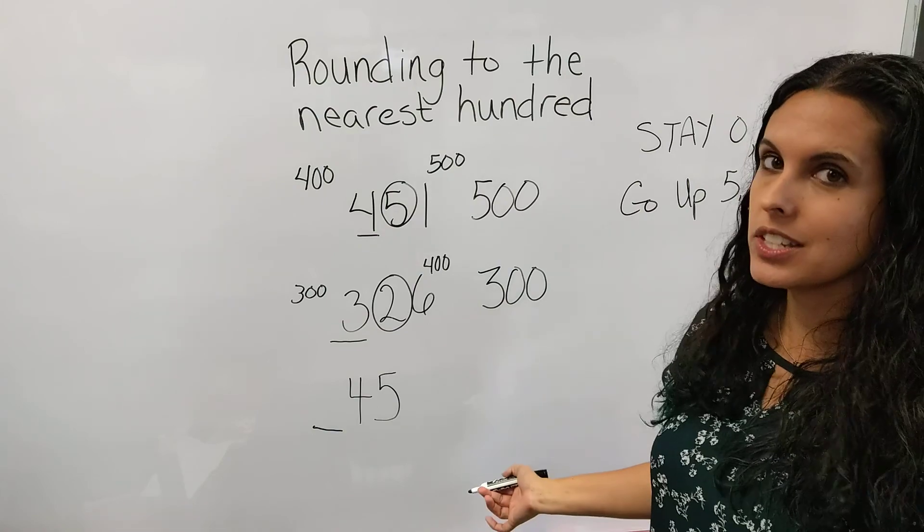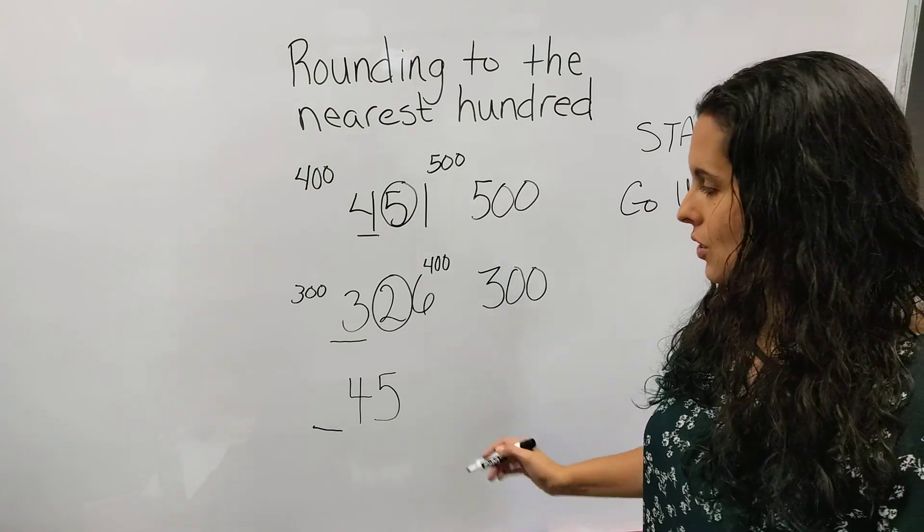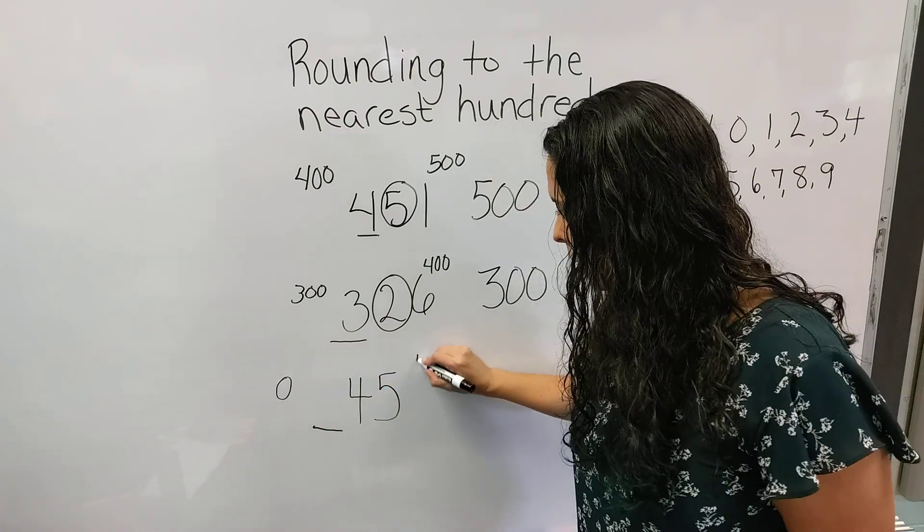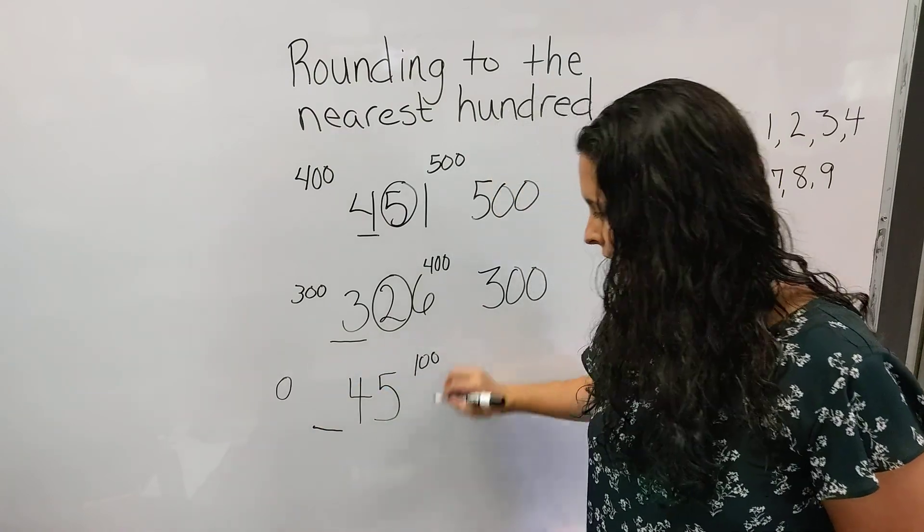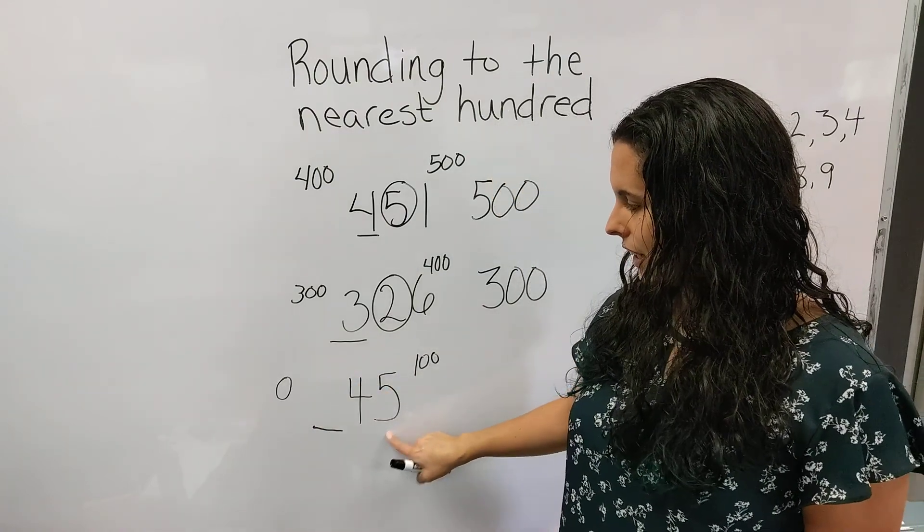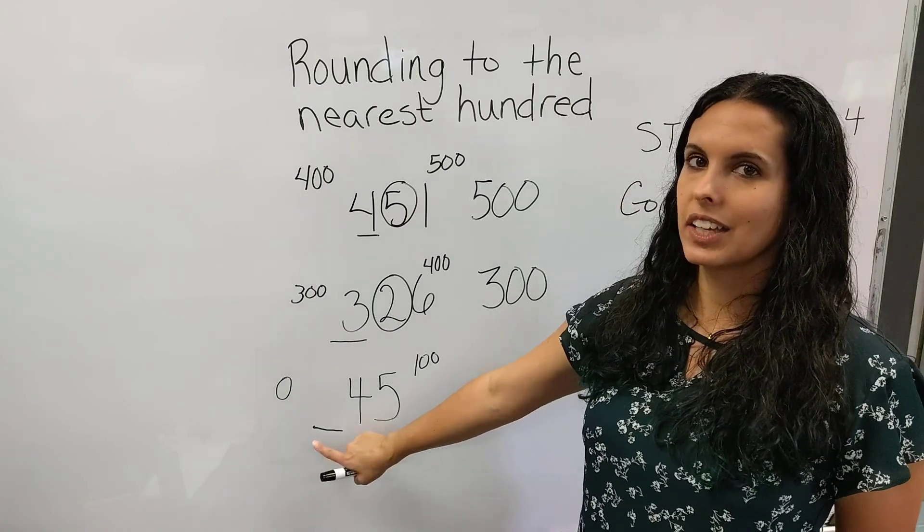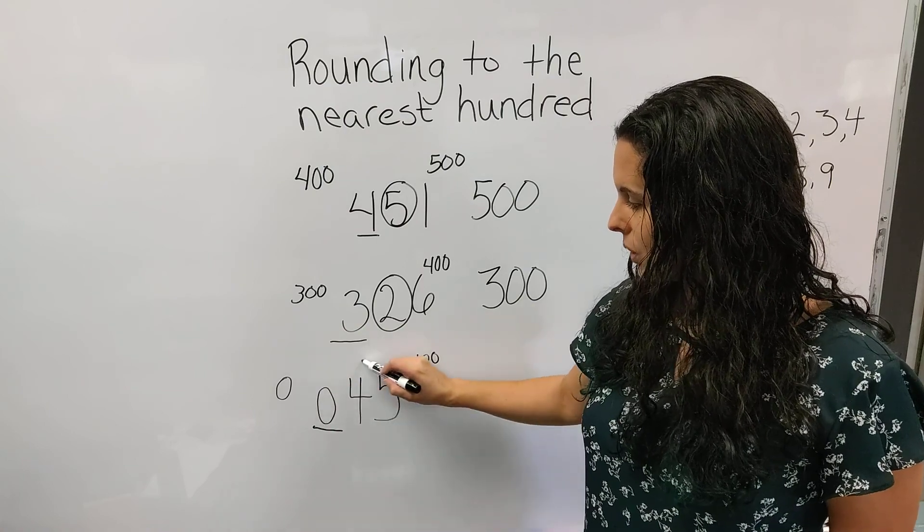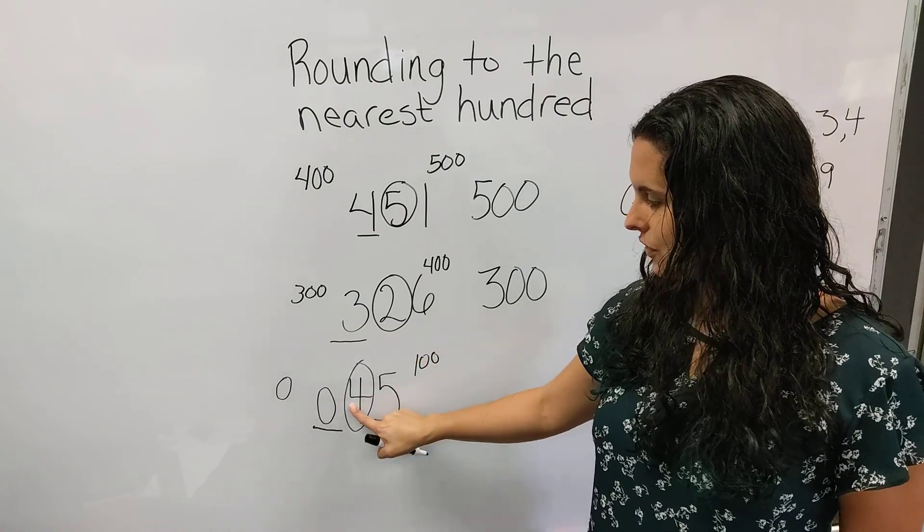So I still am going to round it to the nearest hundreds. So now my choices are zero or 100. It's a 45 on a number line. If I'm underlining my hundreds place and there's nothing there, you can put a zero if you need to. You want to circle the bossy number and it's a 4.